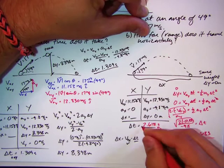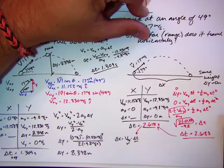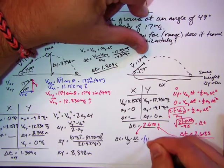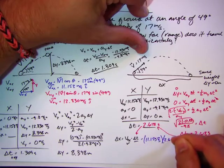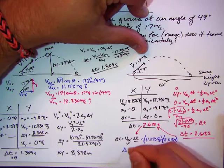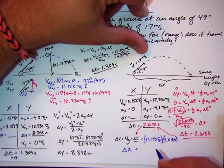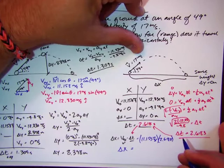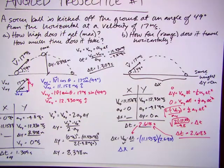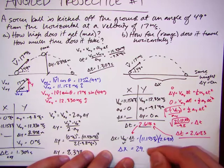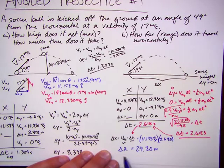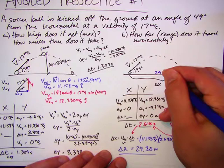And then now I can set it up here and solve for my delta x. So my vx is 11.153 meters per second times my time, 2.618 seconds. Seconds cancel. And I get a range, delta x, of 29.198. So let's do 29.20 meters.